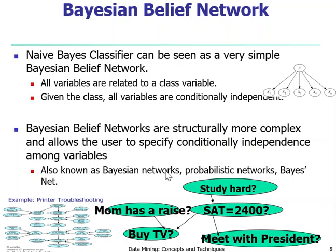However, Bayesian belief network is just one graph model — it does not cover all scenarios. Other common well-known graph models include Markov models. We won't have time to cover Markov models in this class. But if you study graph models, you will be exposed to a set of other graph models that use probability to make inferences.